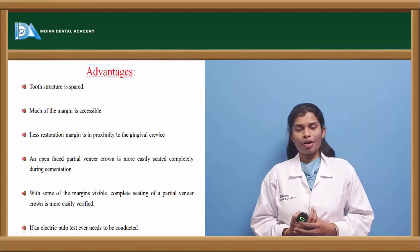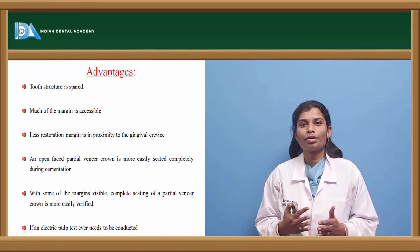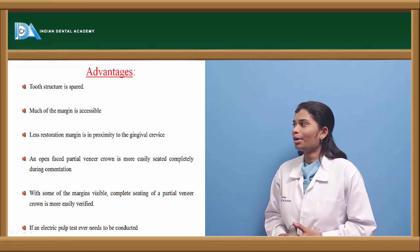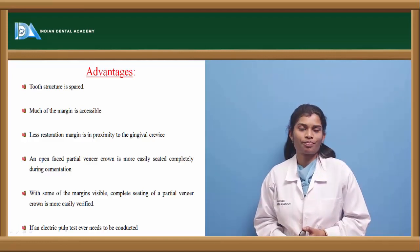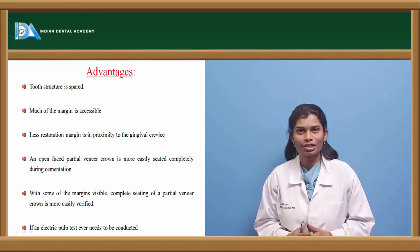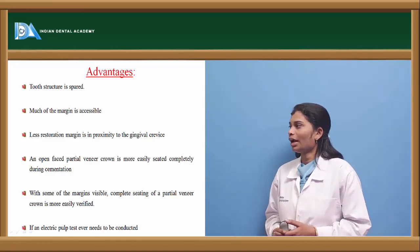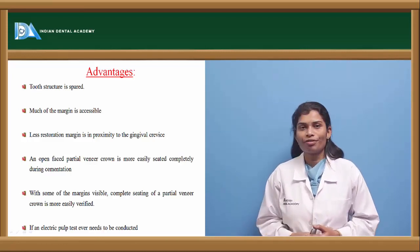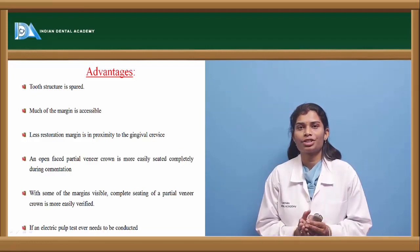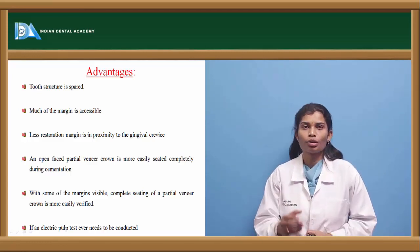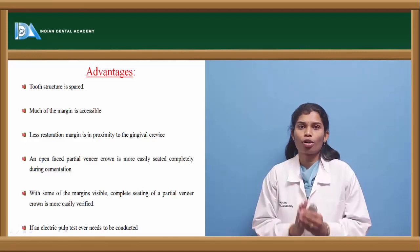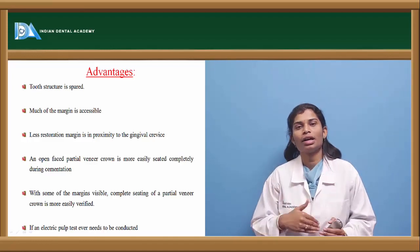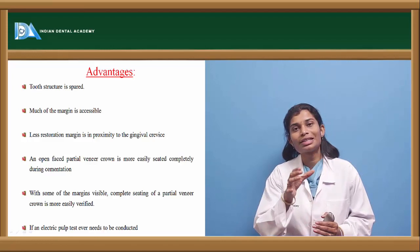Advantages: The primary advantage is tooth structure preservation. Much of the margin is accessible, meaning only part of the tooth is covered by the finish line, so hygiene can be maintained. There is less restorative margin in proximity to the gingival crevice. An open-faced partial veneer crown provides good guidance during cementation — you can actually see if there is proper seal between the restoration and tooth at the proximal and gingival surfaces.